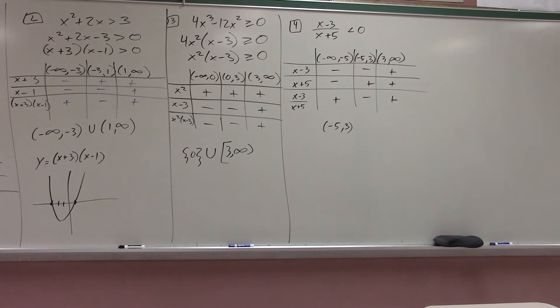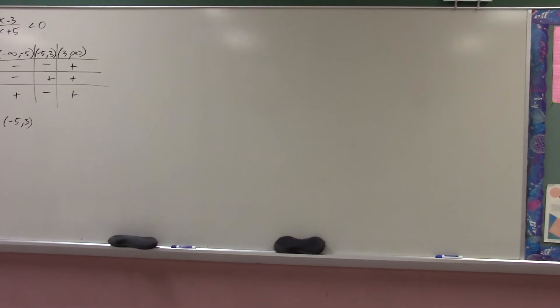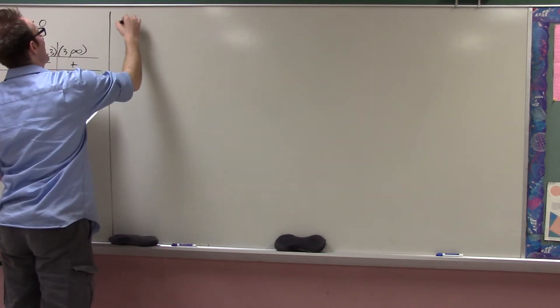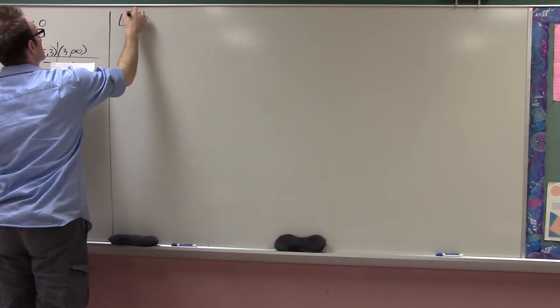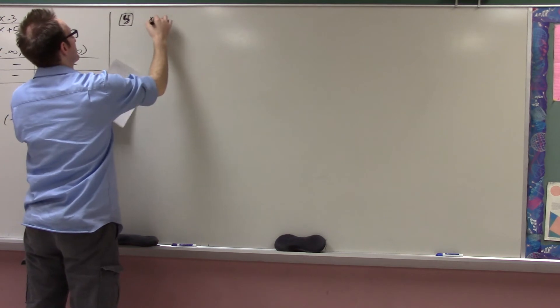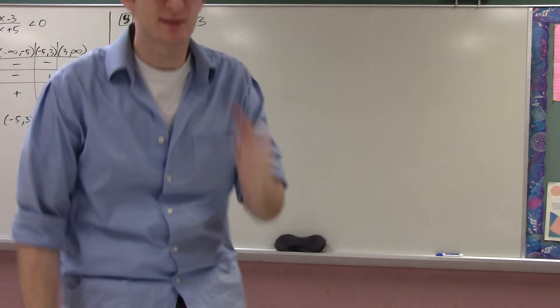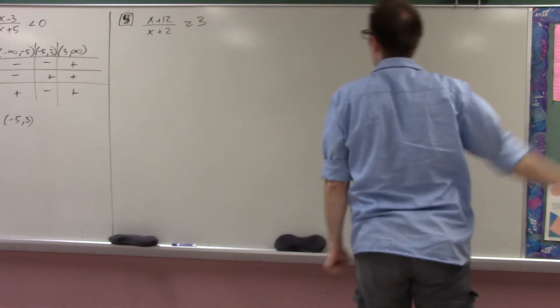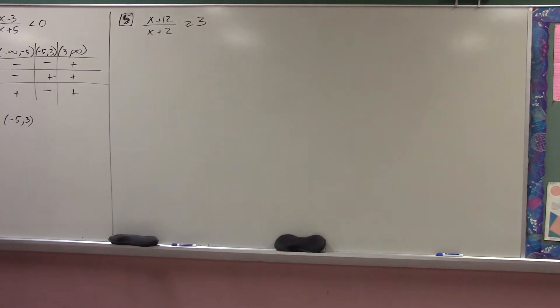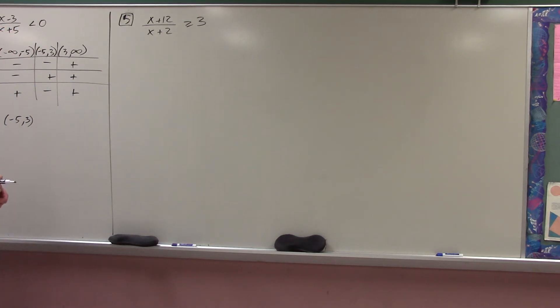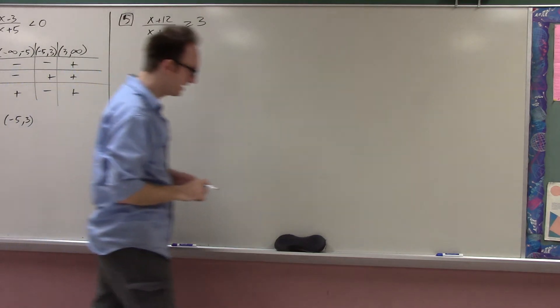Let's do one slightly harder. For those who haven't done algebra 2, this will be exciting. Here's an inequality — let's call it number 5: x plus 12 over x plus 2 is greater than or equal to 3. Now let's have a real talk: it is very tempting to multiply both sides by x plus 2, but we have to resist that temptation because it will lead to invalid results.